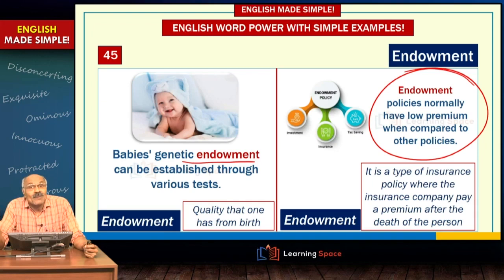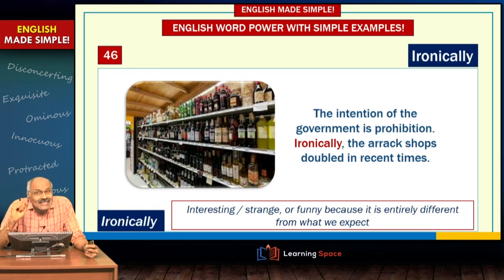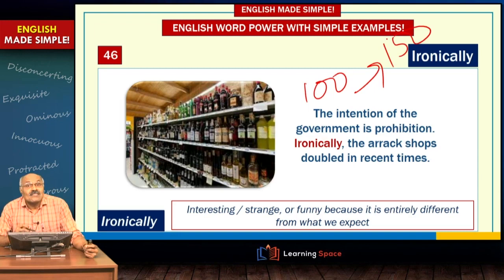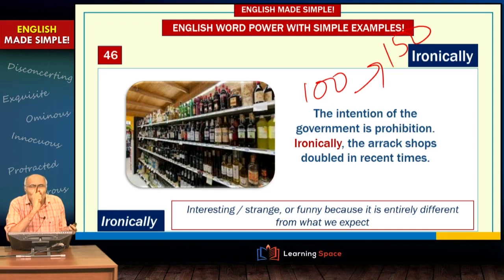Next is 'ironically' — a most important word you come across frequently. Ironically means it is strange, it is really difficult to understand. For example: the government said prohibition is the goal and within two years it will implement prohibition, but the liquor shops went up from 100 to 150 during the past one year. That means the government said one thing but in contrast the opposite happened — the intention is prohibition, yet ironically the shops increased.